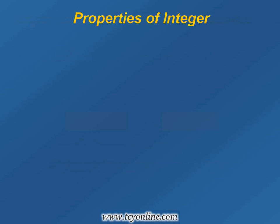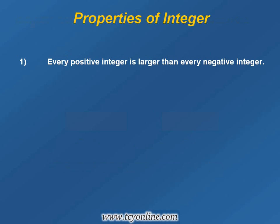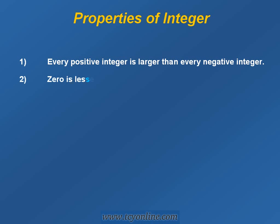Now let us study some well-known properties of integers. The first property states that a positive integer is always greater than any negative integer. For example, 2 is greater than negative 3.